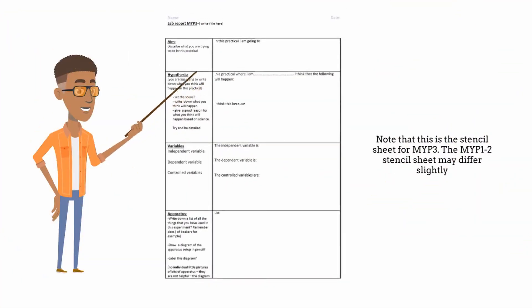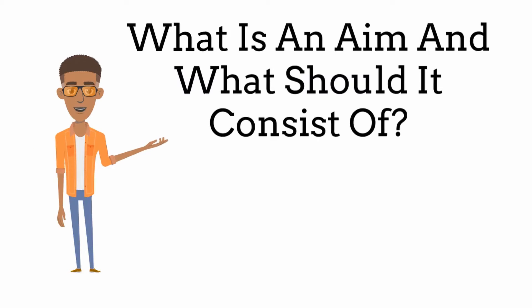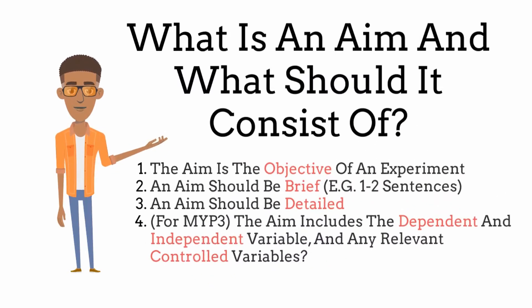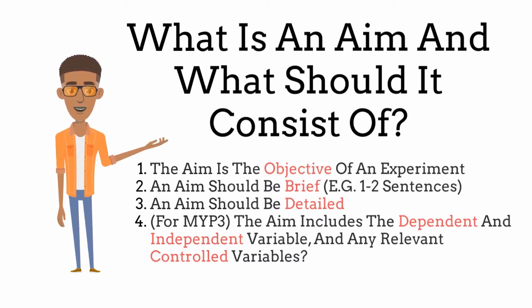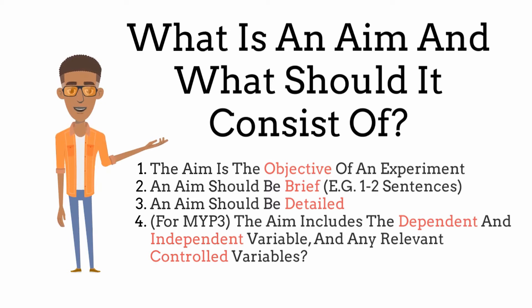An aim is most likely the first thing you'll see when you open up the lab report stencil sheet. To define the aim in simple terms, it is basically the objective of an experiment — you describe exactly what you are trying to do in the practical you have carried out. Generally, an aim should be brief, no longer than 1-2 sentences. Furthermore, when writing an aim, you want to be as specific as possible, a fact that is also described in the criteria sheet.